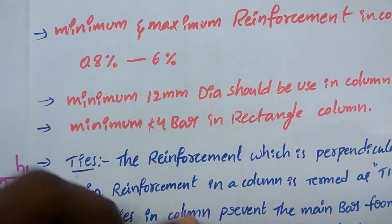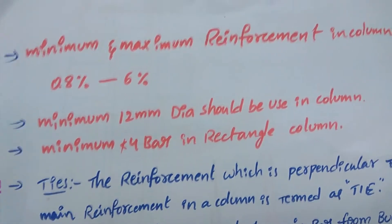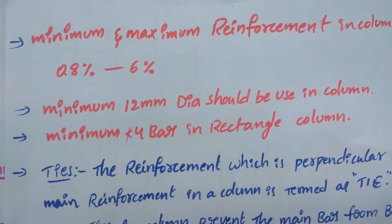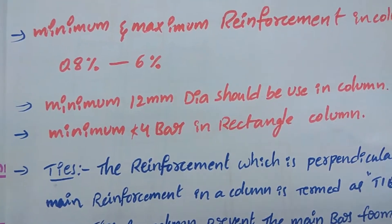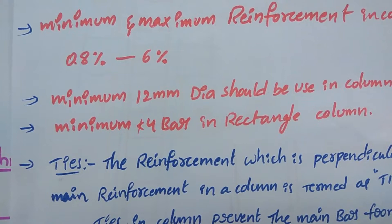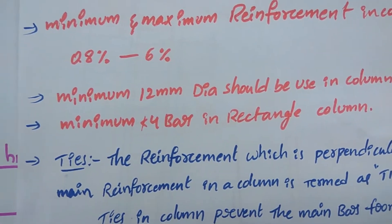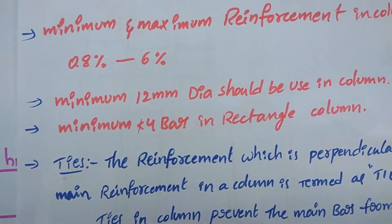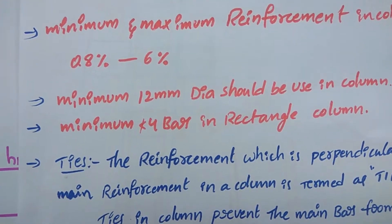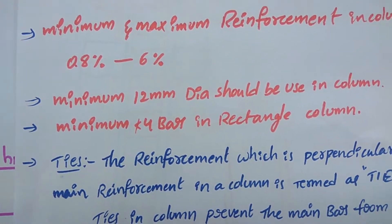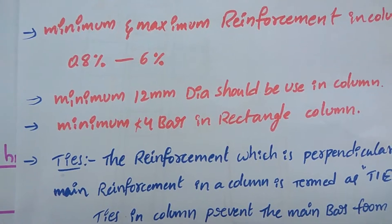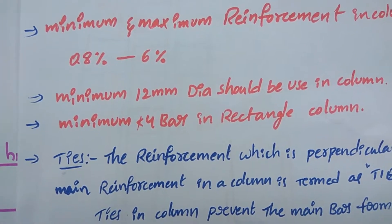Minimum reinforcement in the column is 0.8% and maximum reinforcement is 6%. Minimum diameter of the bar used in a column is 12mm.